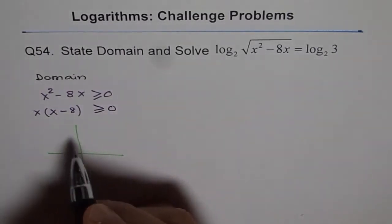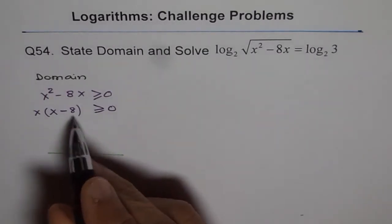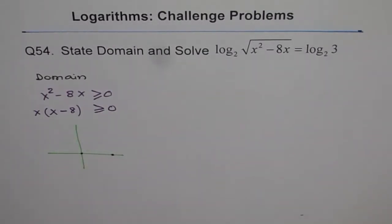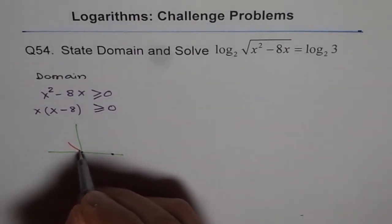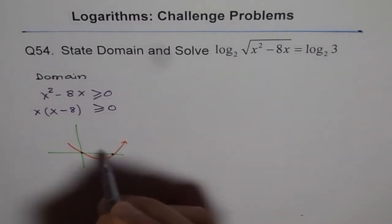So, that gives us two zeros. One is at x equals 0 and the other one is at 8. And since the coefficient of x squared is positive, we have a parabola which goes like this and goes up, right?